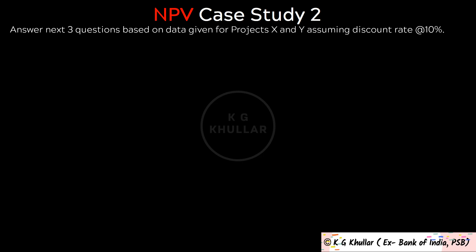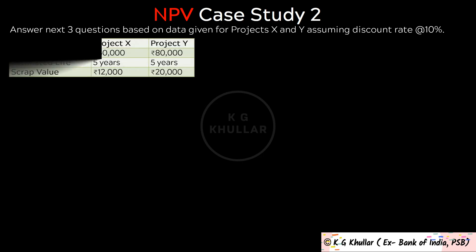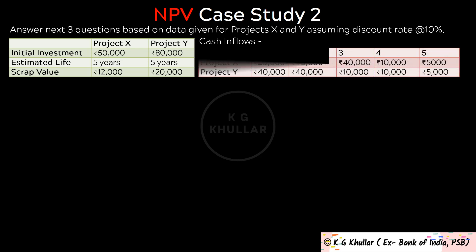Let's look at a final case scenario. Answer the next 3 questions based on data given for projects X and Y assuming a discount rate of 10%. Initial investment for X is Rs. 50,000 and for Y is Rs. 80,000. Estimated life for both projects is 5 years. Scrap value for X is Rs. 12,000 and for Y is Rs. 20,000. Cash inflows for each year are also given for both projects.